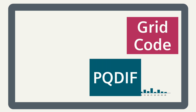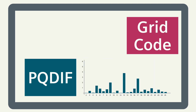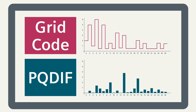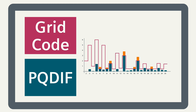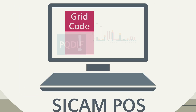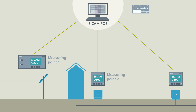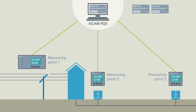The comparison of the measured actual states with the grid code limits makes the individual interferences visible. The results obtained can be presented measurement-point-related in reports that CCAM-PQS generates after the grid code evaluation in parameterizable time intervals.